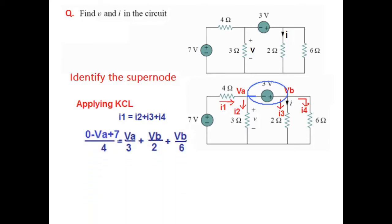Converting in terms of voltage, now I1 is going from 0 to VA. So 0 minus VA. And this battery is also in the same direction. The current from the battery is in the same direction as the main current. Therefore, this will be added. So plus 7 divided by the resistance 4.